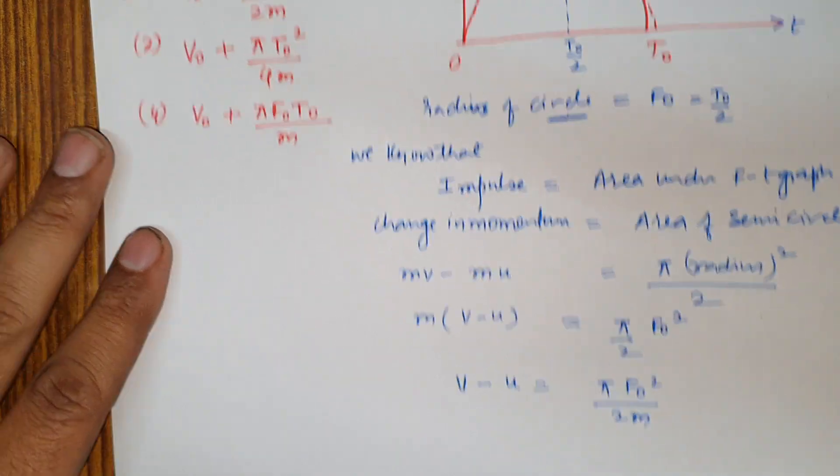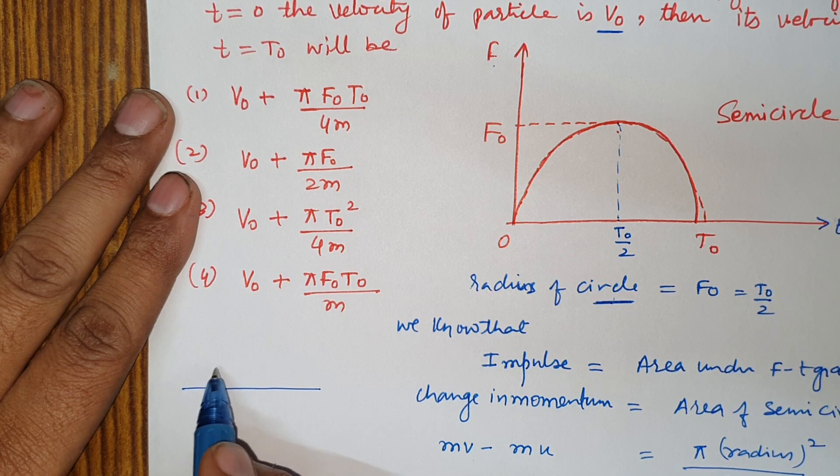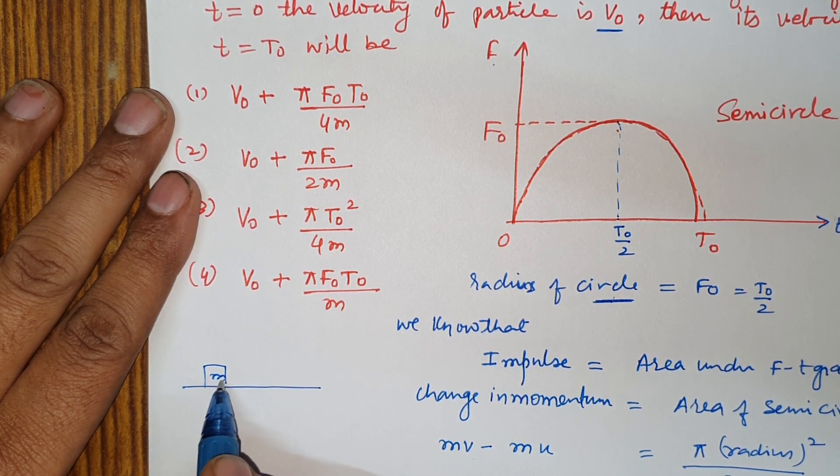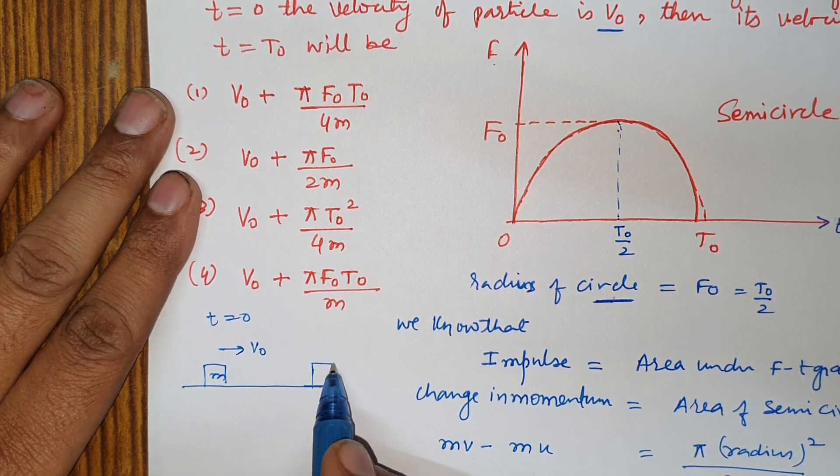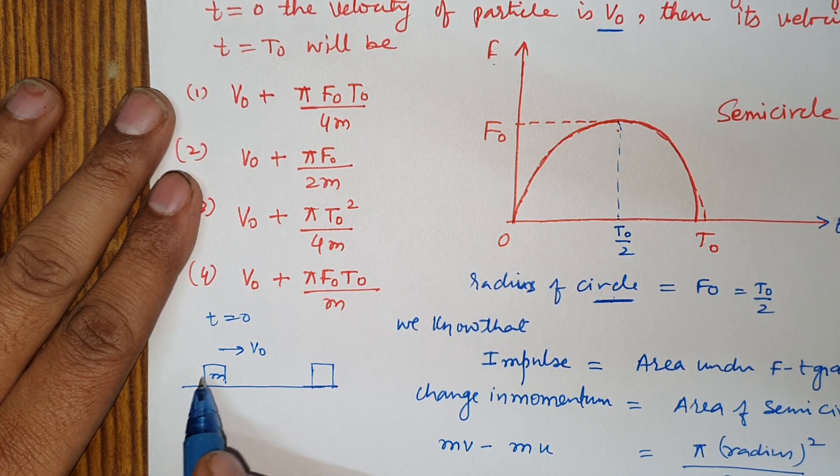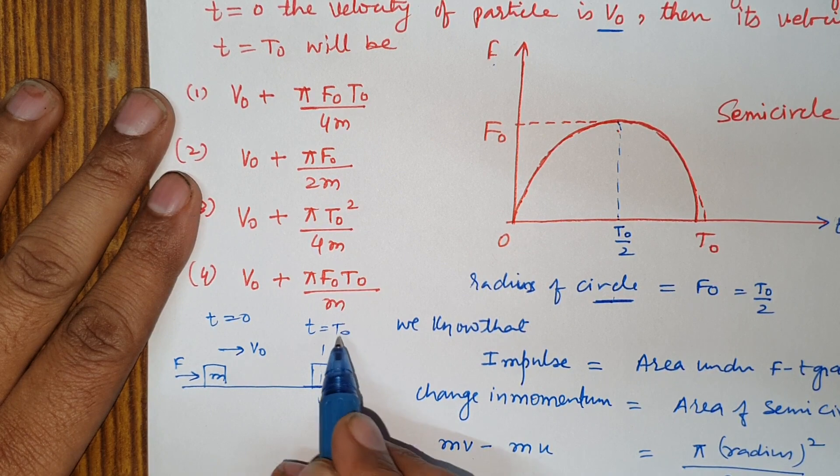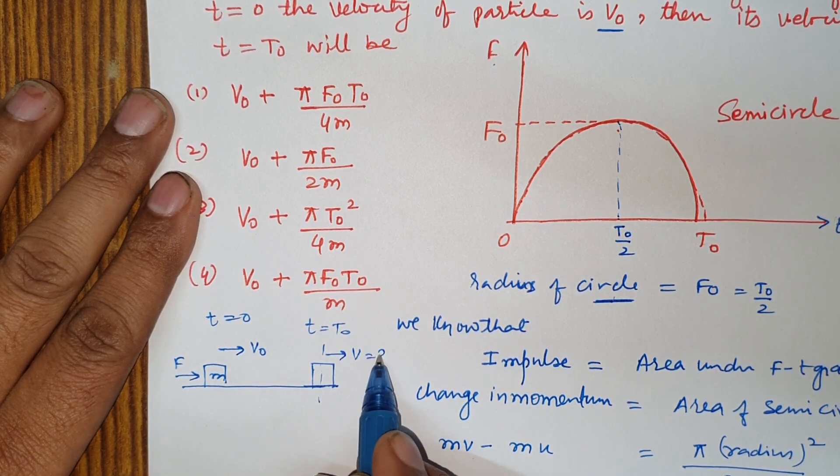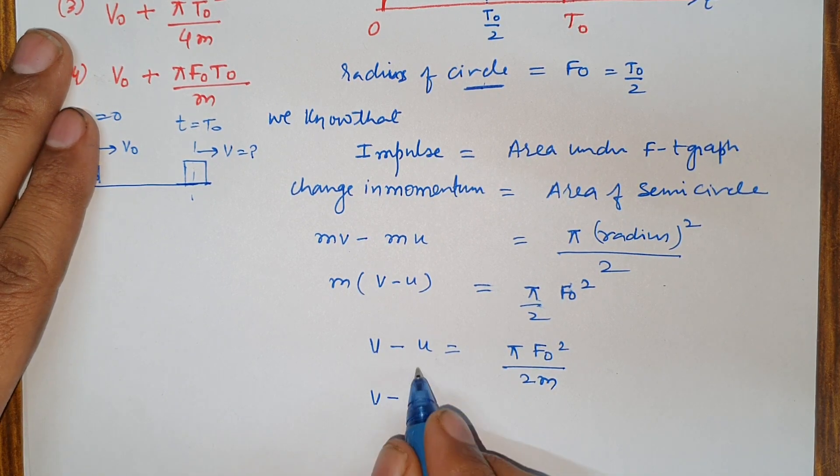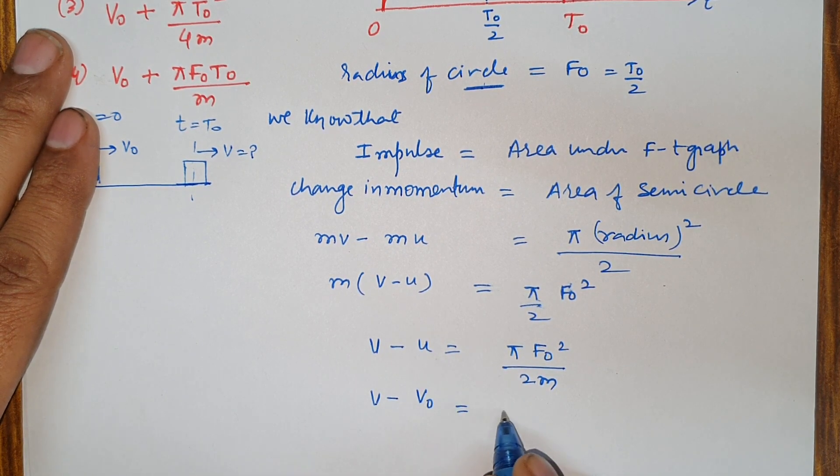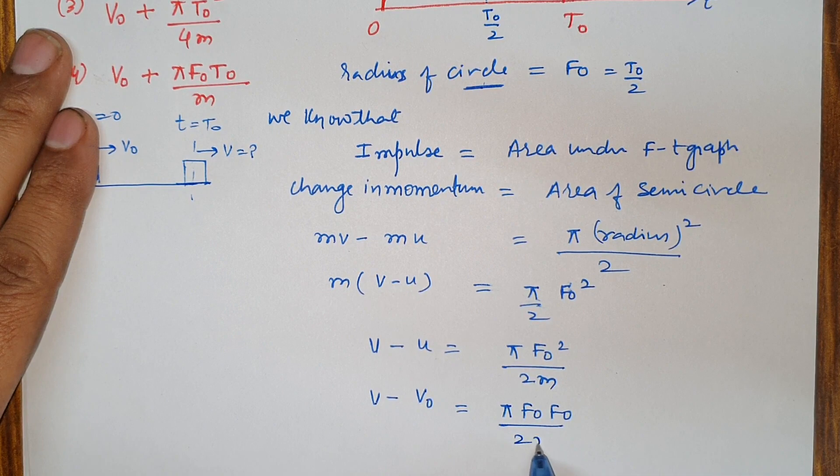A question is given, initial at time 0 given. Particle is given m and initial v0. When time t is given force f, and time t is given, v is given. v minus v0 is given pi f0 multiplied by f0 divided by 2m.